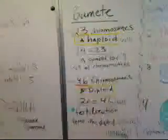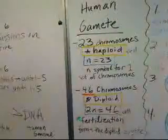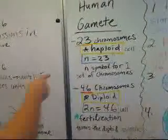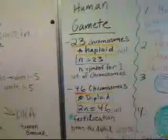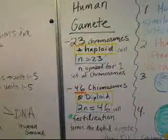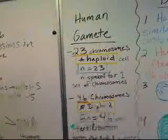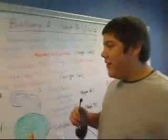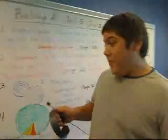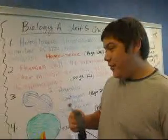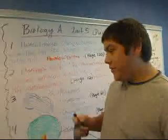The human gamete has 23 chromosomes. Haploid cells symbolize one set of chromosomes — 46 chromosomes. 46 chromosomes are diploids, and the equation for that would be 2N, or two sets of 23 chromosomes equal 46.